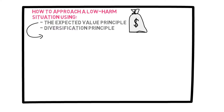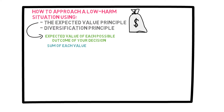Remember that with the expected value principle, you look at the expected value of each possible outcome of your decision. The highest expected value is the option you should go with. To do this, we look at the sum of the values times the probabilities of those values. This is great when dealing with quantifiable numbers such as in finance.